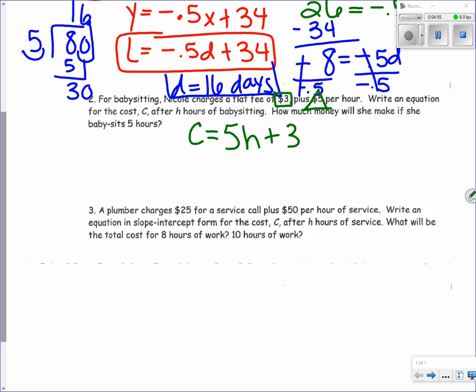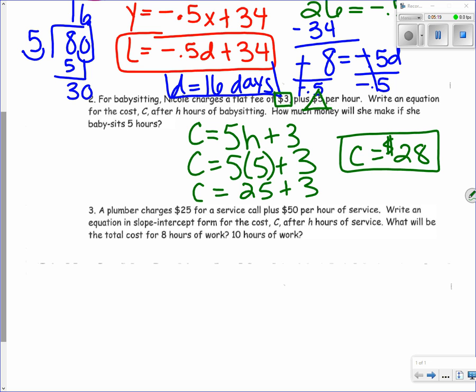It asks how much she would make for 5 hours. We're going to put 5 in where H is. 5 times 5 is 25, plus 3. She would make $28 for working 5 hours.